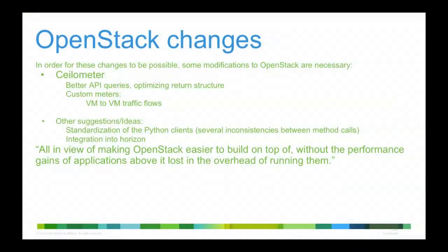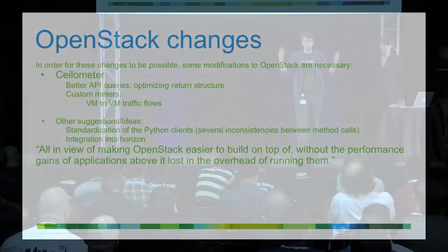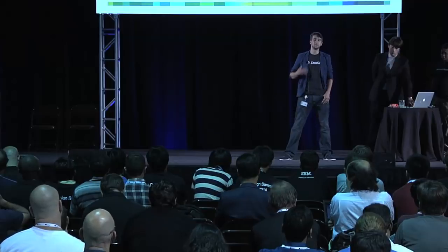In order to do this, we've had to make a few changes to different components in OpenStack. Most of this data is pulled from Ceilometer. We've slightly changed the structure of Ceilometer for better API queries so the return structure is optimized, and we've had to add some custom meters to get flows between VMs. A few ideas we've had include standardization of the Python clients — there are a lot of inconsistencies — and potentially integrating this into a Horizon panel. The end goal is to make it easier to build on top of OpenStack so you can see what's going on in your cloud and manage it better.